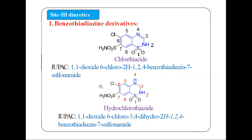Next is hydrochlorothiazide. Hydrochlorothiazide is similar to chlorothiazide — the only difference is that a hydrogen has been added and the double bond is absent. So the name is: 1,1-dioxo (or 1,1-dioxide), 6-chloro, 3,4-dihydro-2H-1,2,4-benzothiadiazine-7-sulfonamide.